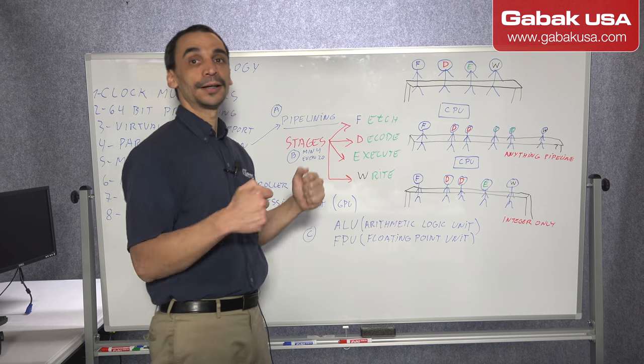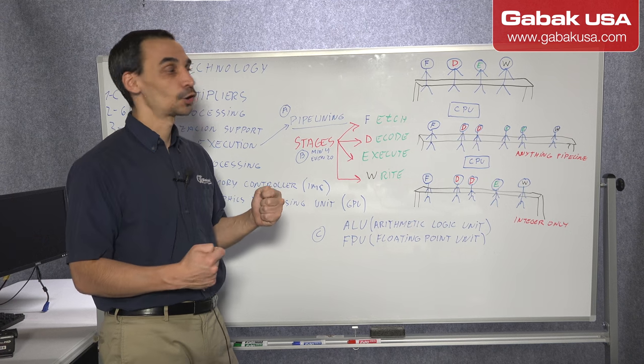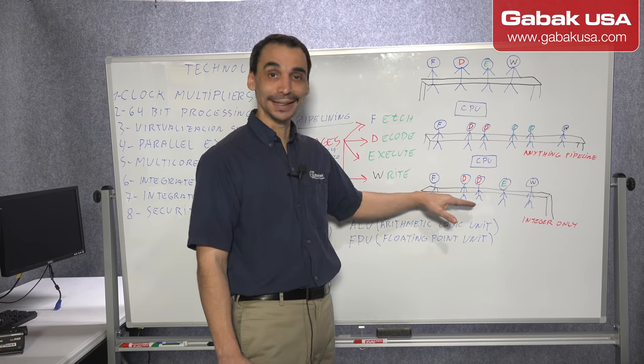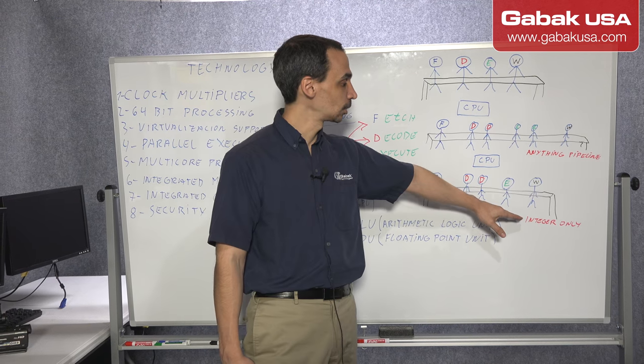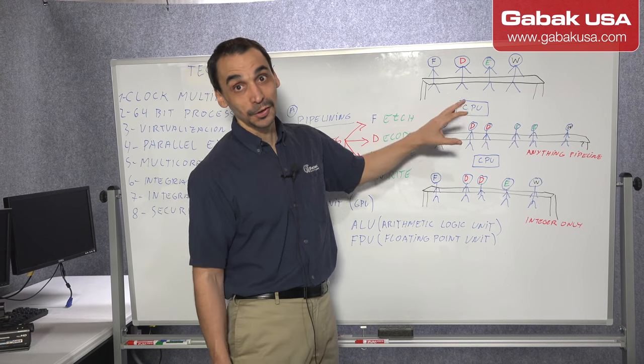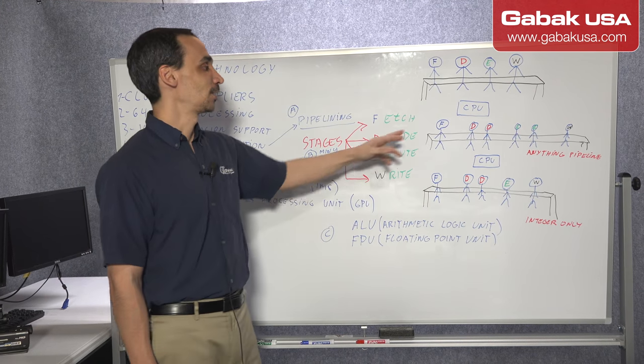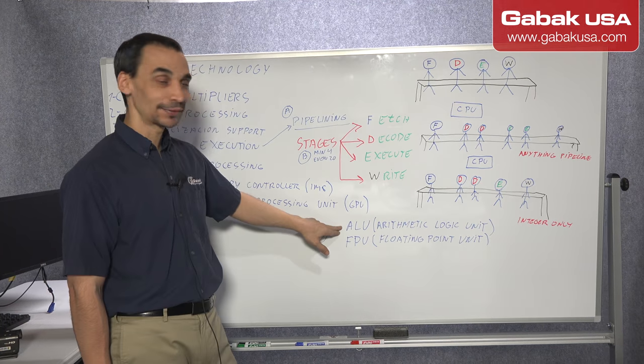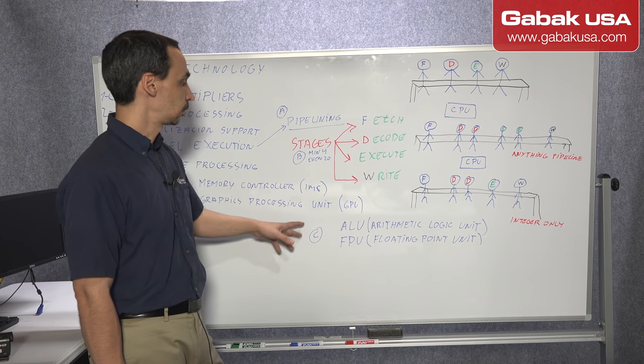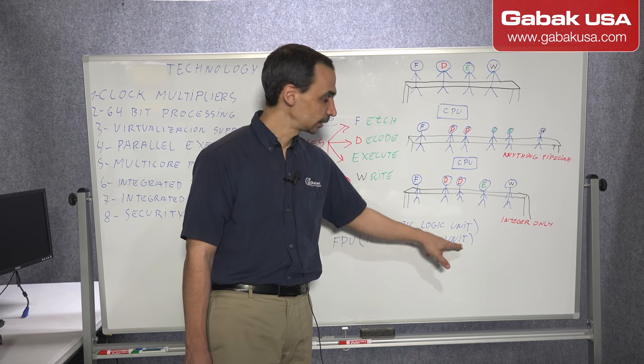The thing is, there are some commands that are more difficult to process than others. If you want the easy ones, usually it will go here, integer, in the integer only. And if you want the more difficult stuff, you're going to send it to the other way. Here we have ALU and then FPU. It means arithmetic logic unit and the other floating point unit.